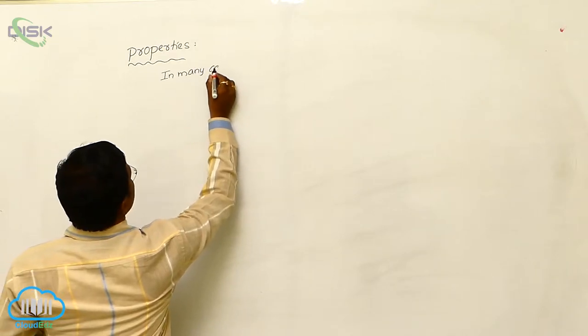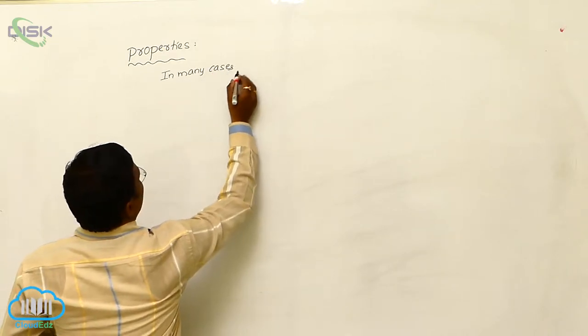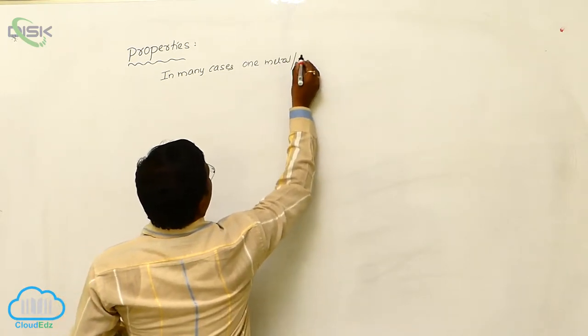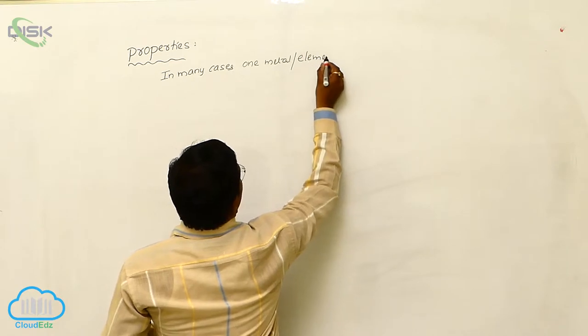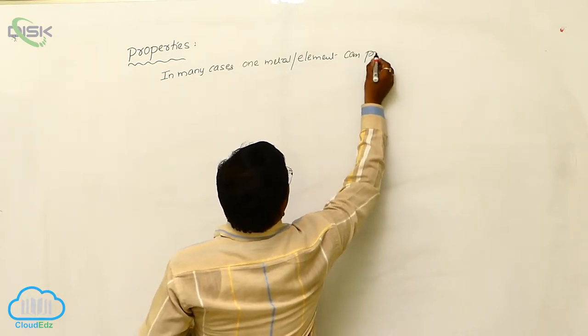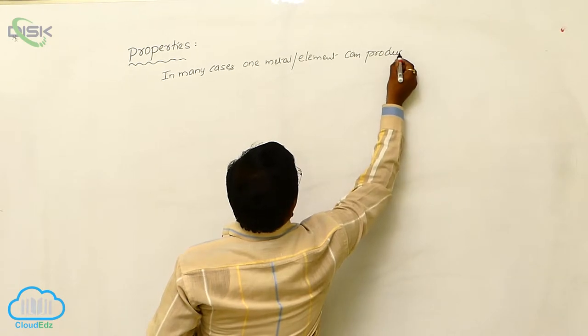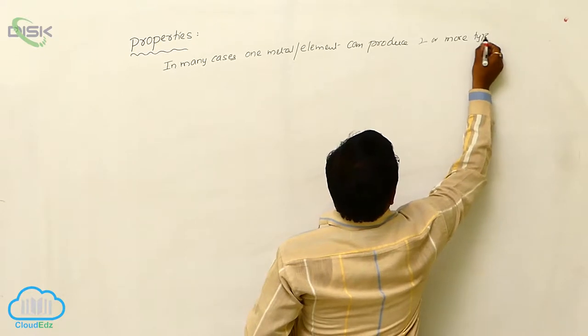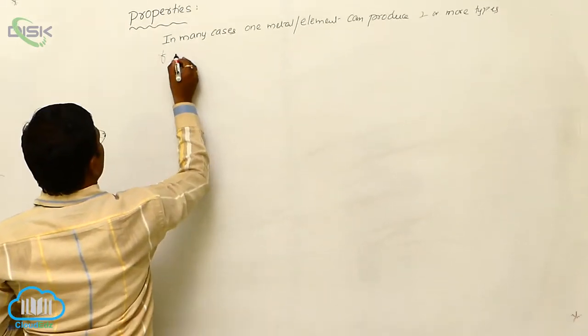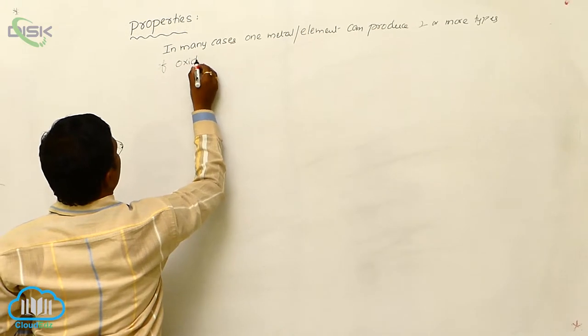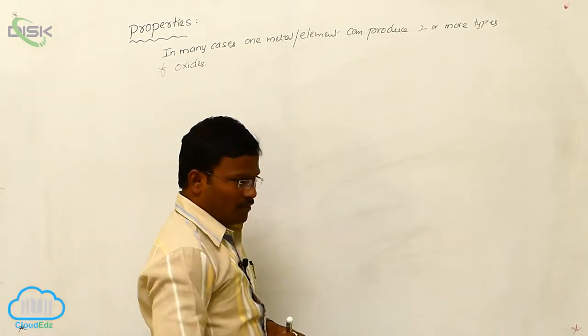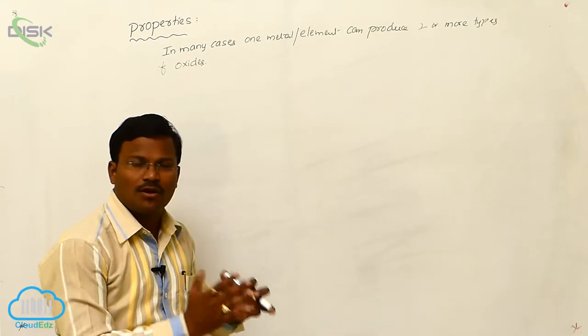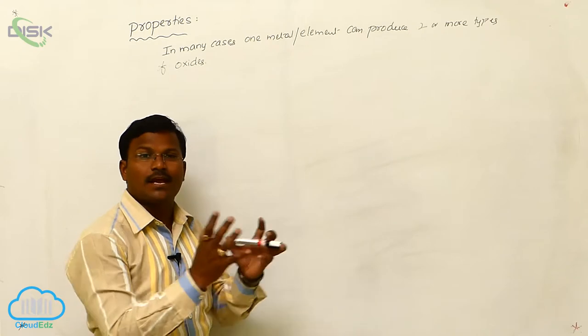In many cases, one metal or element can produce two or more types of oxides by reacting with oxygen. For example, just in the previous case of our discussion,